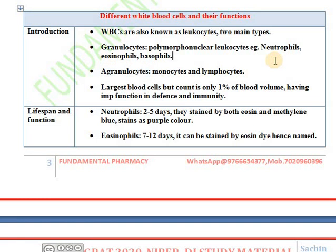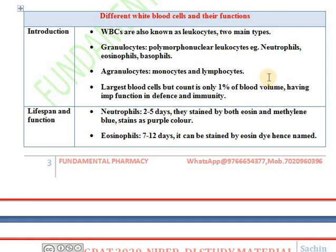Why they are called granulocytes and agranulocytes? Granulocytes will have polymorphonucleus — that means they will have different lobes in their nucleus. Some cells will have two lobes, some three, four, or five lobes. That's why they are known as polymorphonuclear leukocytes. Examples of such cells are neutrophils, eosinophils, and basophils. Agranulocytes include monocytes and lymphocytes.